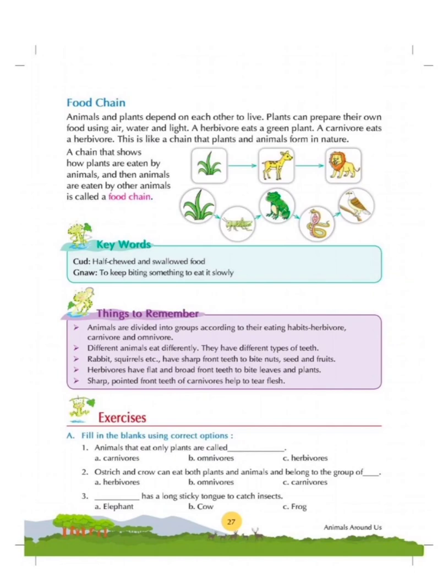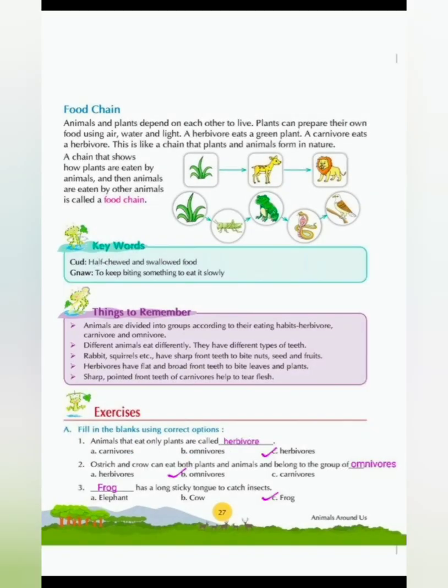The explanation of this chapter is done. Let's move on to the exercises. Question number one: fill in the blanks using correct options. Animals that eat only plants are called — carnivores, omnivores or herbivores? We know herbivores are the animals which eat only plants, so the answer is herbivores.